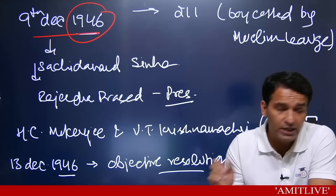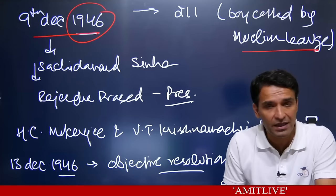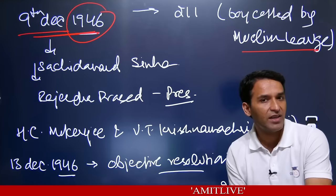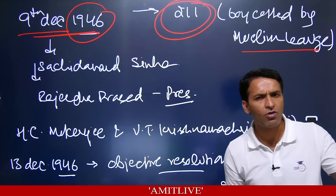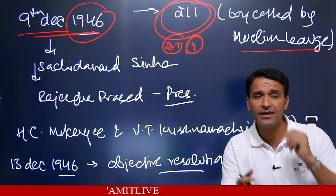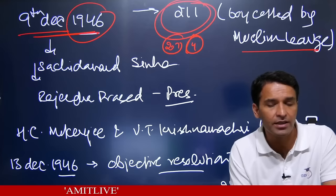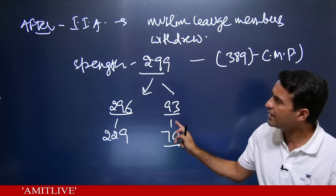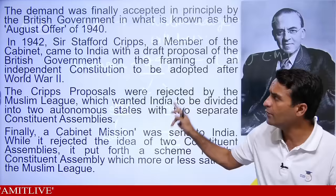Muslim League boycotted and the princely states also kept away. The demand for a Constituent Assembly had been raised by Congress, and in 1940, Britishers accepted it in principle but said they'd do it after World War II. Now it was just a matter of time before we got our Constituent Assembly.